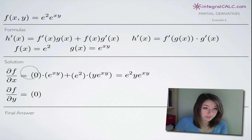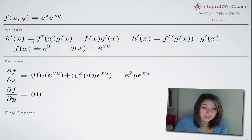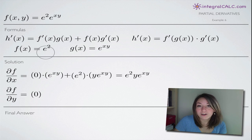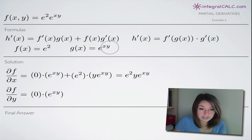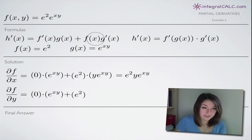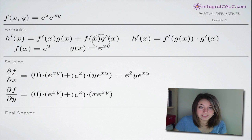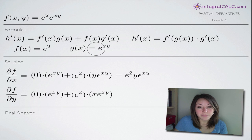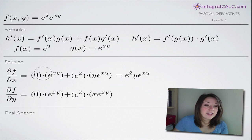Now let's move on to our partial derivative with respect to y. Again, taking the derivative of f of x first — even when it's with respect to y, the derivative of e squared, a constant number, will be zero. Then we add in g of x, which is simply e to the xy, and then we add f of x, which is e squared, and take the derivative of g of x. The tricky part is taking the derivative of g of x this time with respect to y, because this is the partial derivative with respect to y.